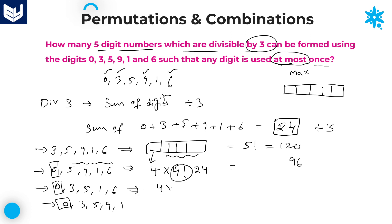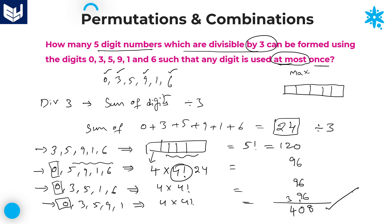Similarly, the third and fourth cases also give 96 each. Adding all values: 120 + 96 + 96 + 96 = 408. Therefore, a total of 408 five-digit numbers can be formed that are divisible by 3 using the digits 0, 3, 5, 9, 1, and 6, with each digit used at most once. I hope you understood the session. Thank you very much for watching.